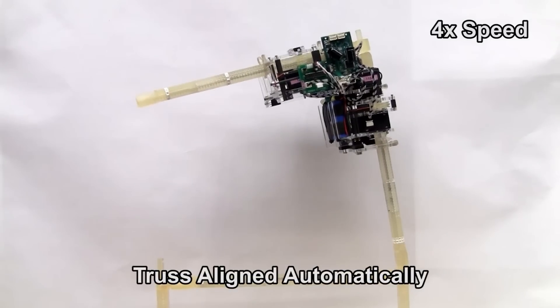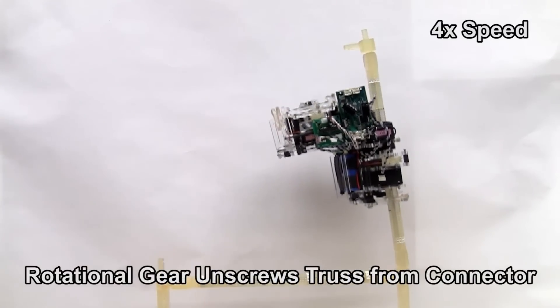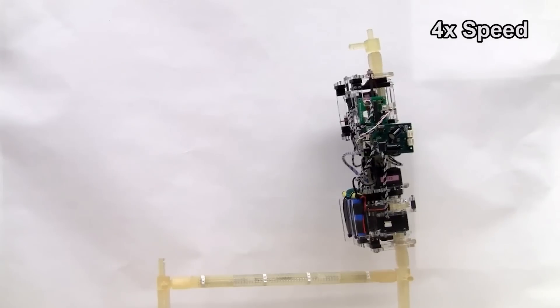The robot is able to latch onto the beams it wants to remove, rotate them into an orthogonal position, and use its rotational mechanism to unscrew them from the connector.